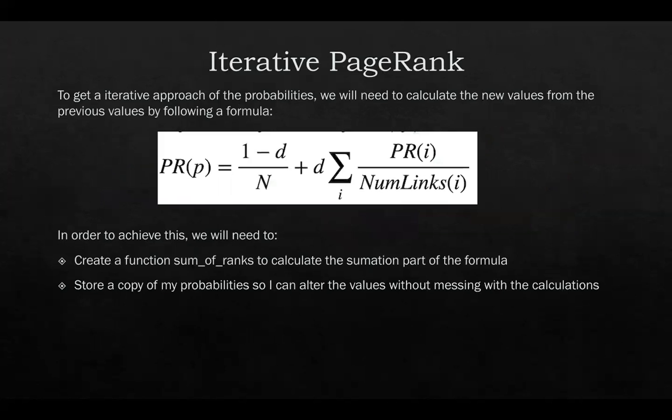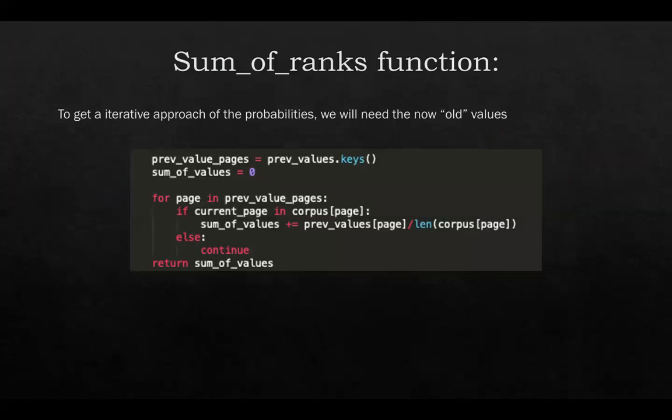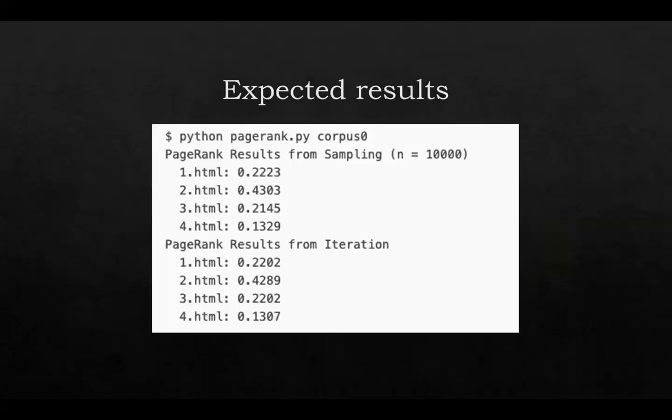Now, going to the iterative PageRank model, we calculate the new values from the previous values using the following formula that is in the screen. And in order to achieve this, we will create the function called sum_of_ranks to calculate the summation part of the formula and store a copy of my probabilities to prevent messing up the values from the calculations. So the sum_of_rank function is pretty simple. We only need to add to the previous probability. We need to divide it by the length of the links we have there.